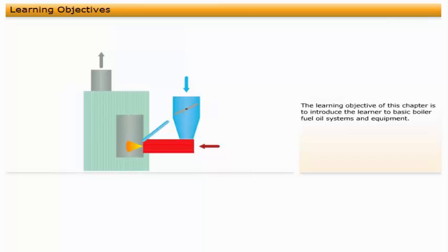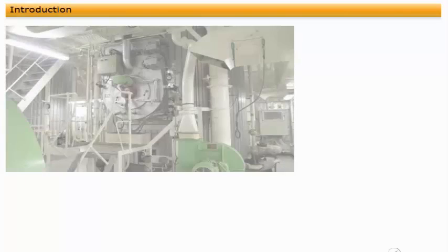The learning objective of this chapter is to introduce the learner to basic boiler fuel oil systems and equipment.